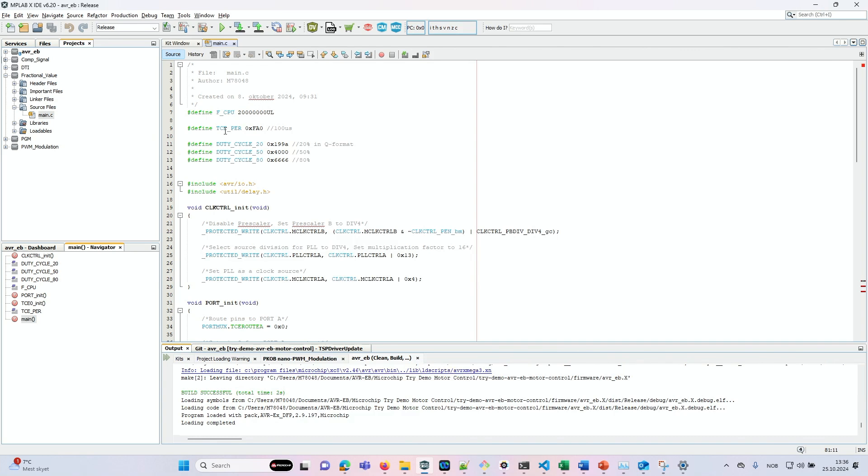The TCE also allows for fractional values. So instead of writing an absolute value for the compare register, we can actually just write a fractional value in Q format and the TCE will actually produce that said duty cycle.